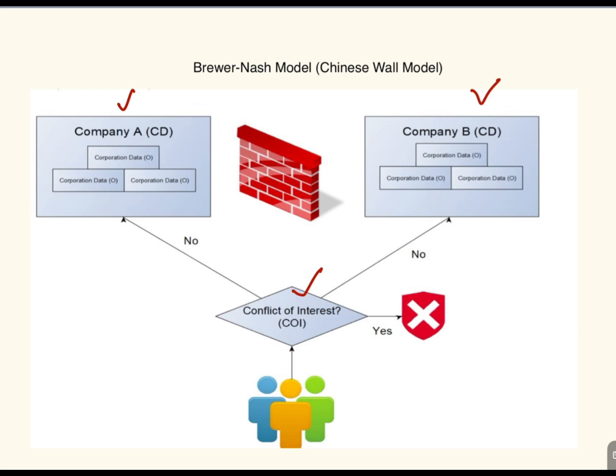A user cannot access sensitive data from a competing company. If a user accesses company A's data, they are blocked from accessing company B's data. This is achieved through dynamic access control, meaning access permissions change over time based on what the user has already accessed.